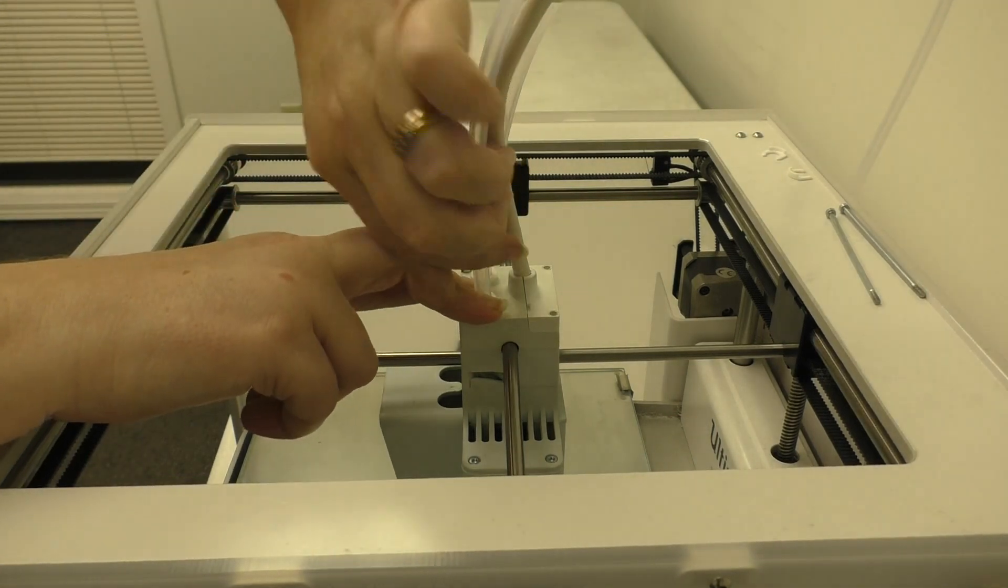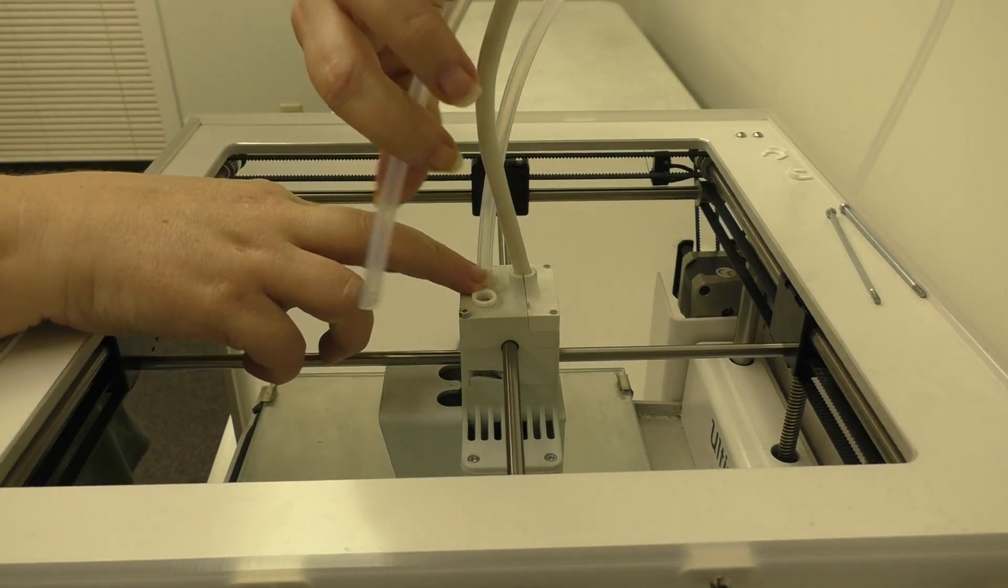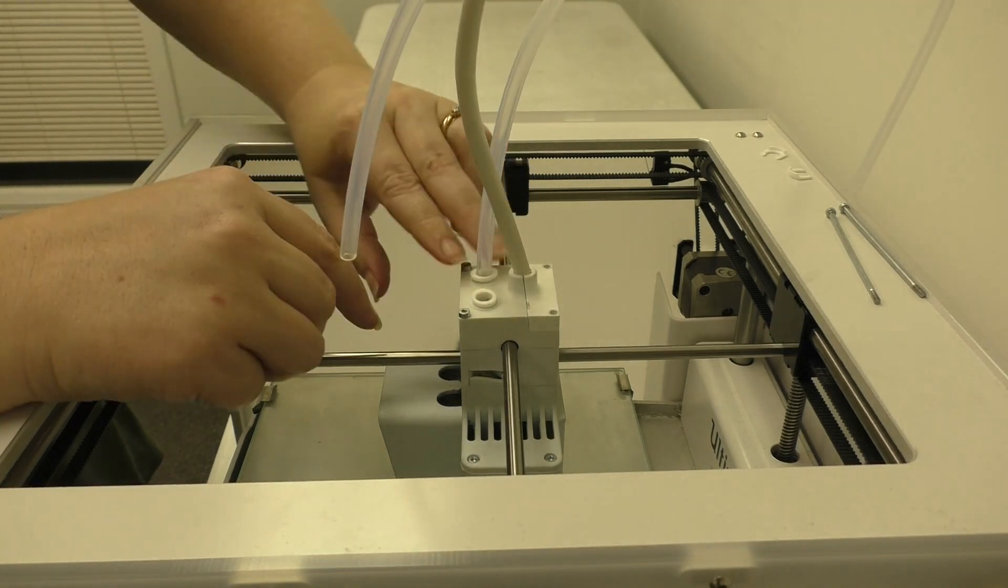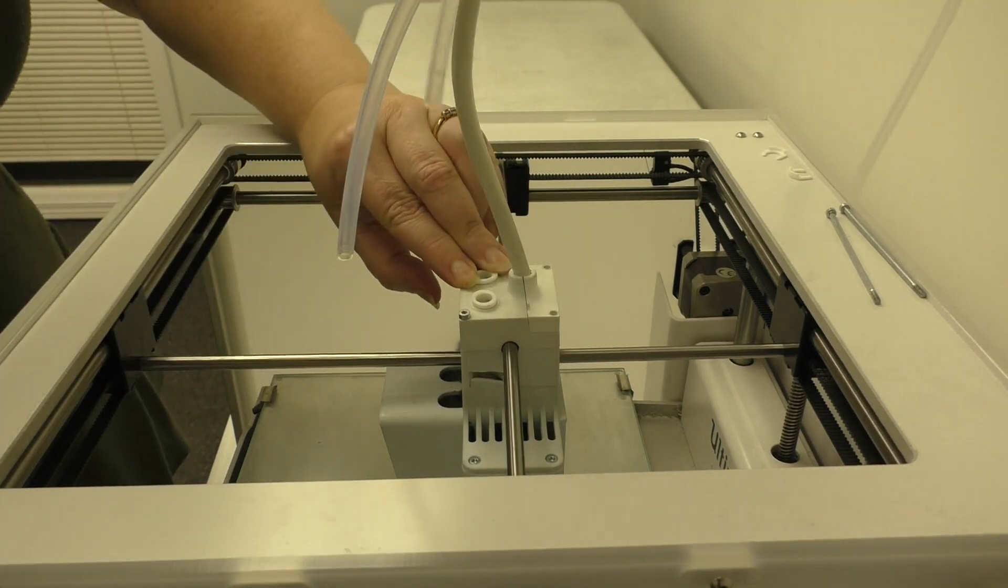Now apply downward pressure to the collet and pull up on the Bowden tube. Do the same thing to the other Bowden tube. Downward pressure and up.